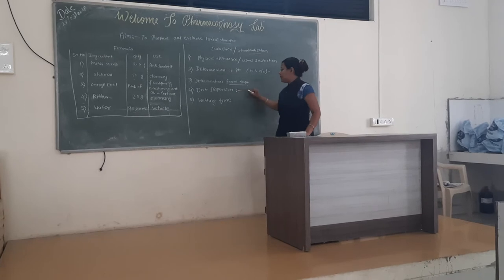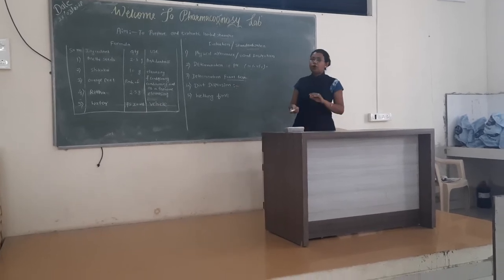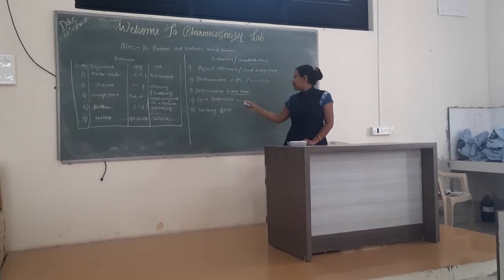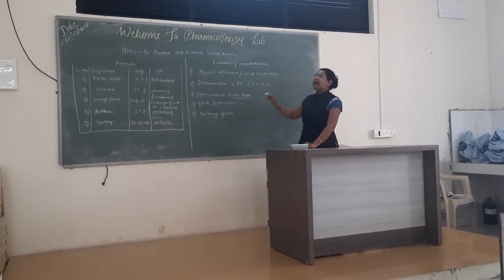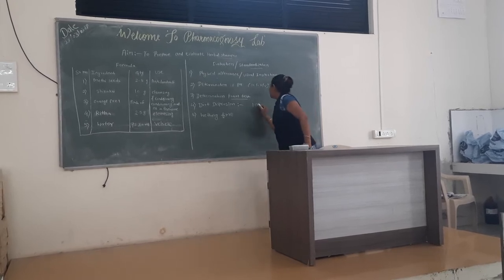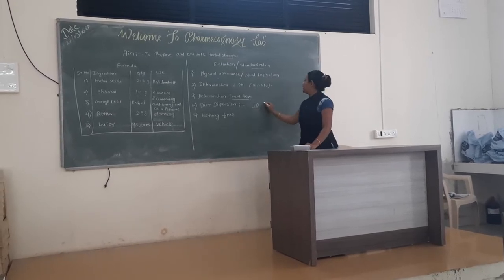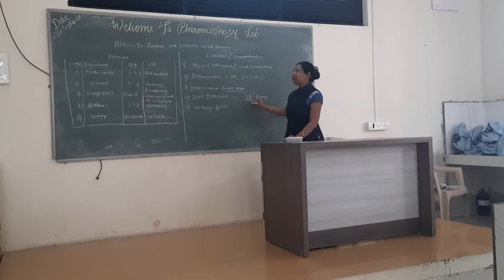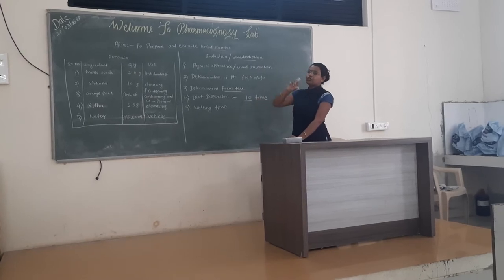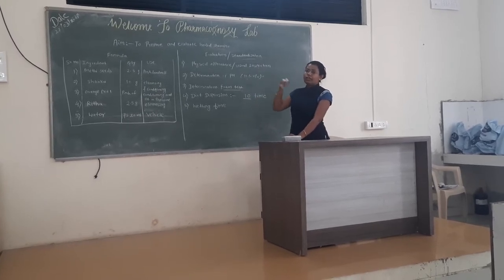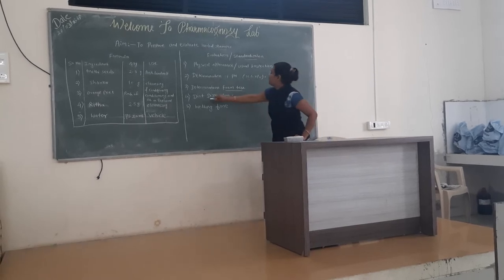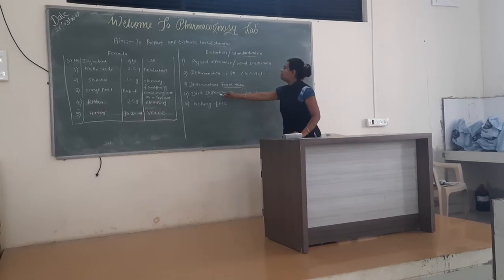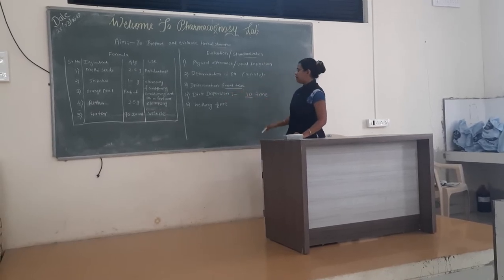We can clean a hair sample to determine the dirt test. Or, if you don't have any hair sample, we can use Indian ink — we add shampoo to the Indian ink and shake it 10 times. After shaking, the ink should be dispersed uniformly and the color of the ink should fade. If it fades, our shampoo has dirt dispersion property. If it doesn't fade, our shampoo doesn't have proper dirt dispersion property.